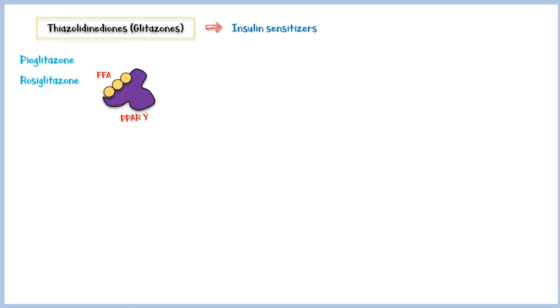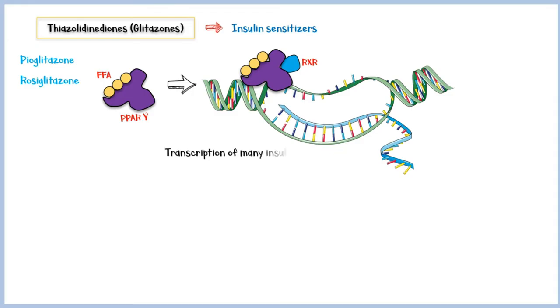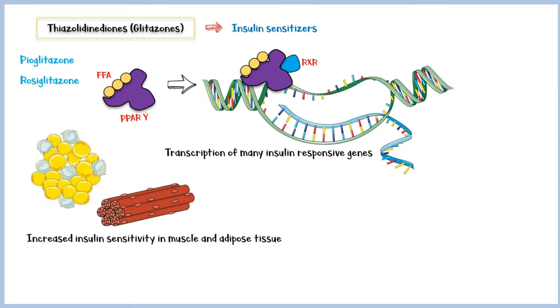Once this happens, PPAR gamma diffuses into the nucleus and binds with another receptor known as the retinoid X receptor. This complex is then able to regulate the transcription of many insulin-responsive genes. In particular, it increases the insulin sensitivity in muscle and adipose tissue by increasing the expression of GLUT4. It also reduces hepatic gluconeogenesis by down-regulating the expression of certain enzymes.